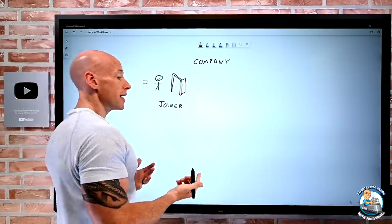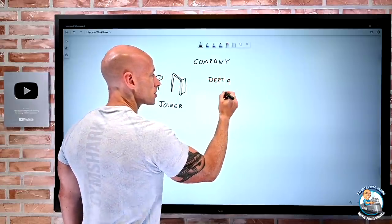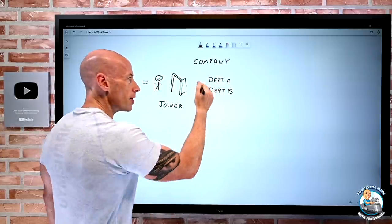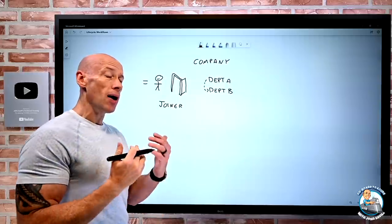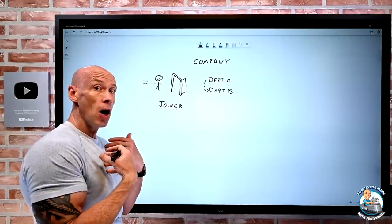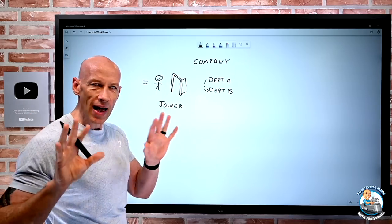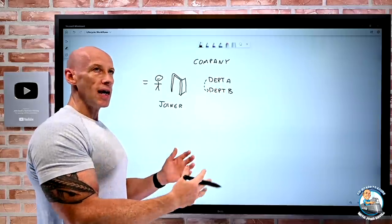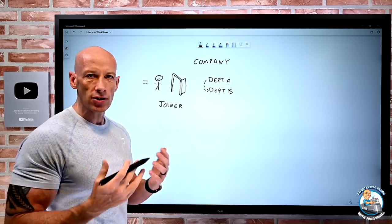Within the organization there are different departments. Maybe I start off in sales or IT, and I move between different departments. When I onboard, I get certain groups based on the department I'm joining, maybe certain teams access, SharePoint applications, licenses. When I move between departments, there's a different set of licenses, apps, groups, and teams I should be part of.